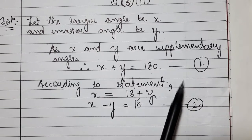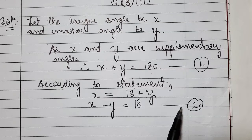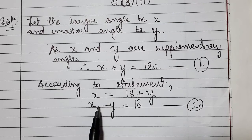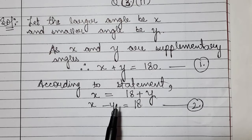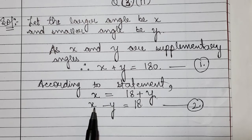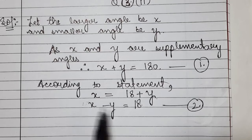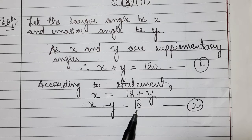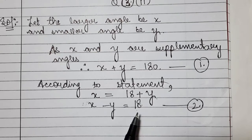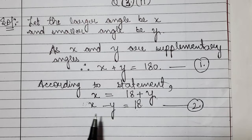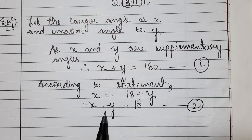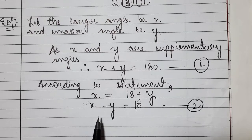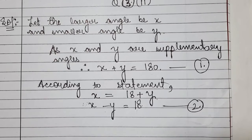Now we solve them with the substitution method. We look at the two equations to see which substitution is easier. Looking at these two equations, equation 2 is a little simpler. We try to find x or y from one equation. From equation 2, x is equal to y plus 18.